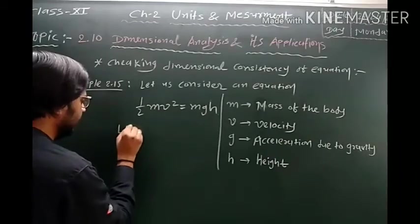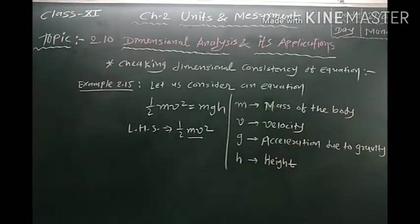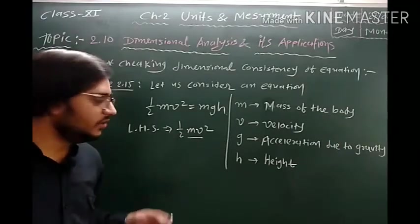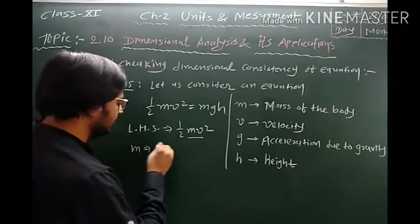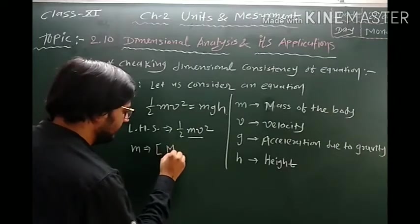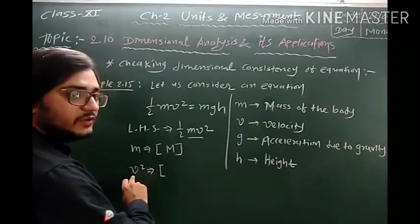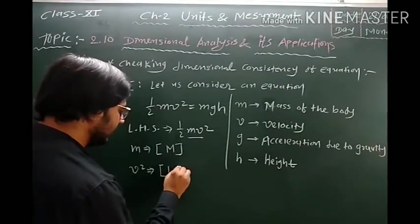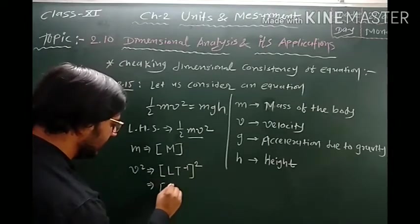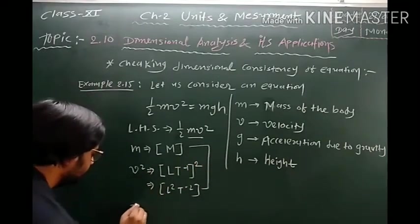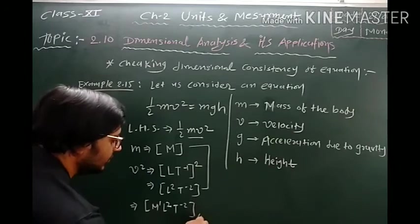First we take the left-hand side: ½mv². Half is a dimensionless integer constant. M is mass, measured in kilograms, so its dimension is M. V² is velocity squared; velocity is measured in meter per second, so its dimension is L·T⁻¹, and squared gives L²·T⁻². Combining both: the dimension of LHS is M¹·L²·T⁻².